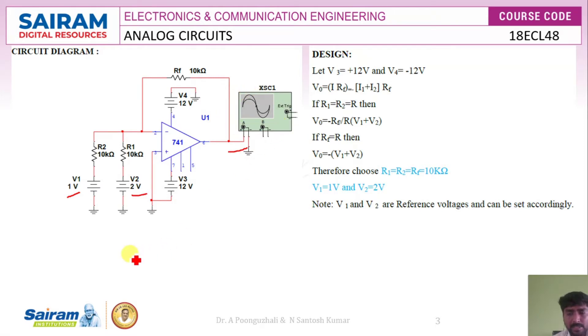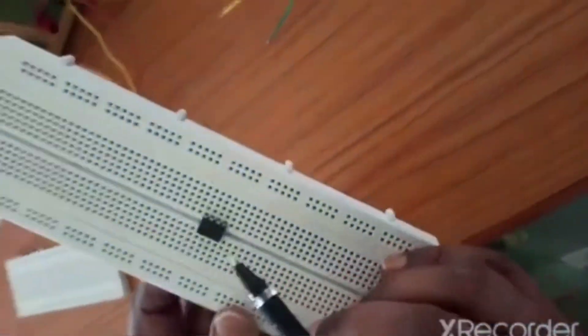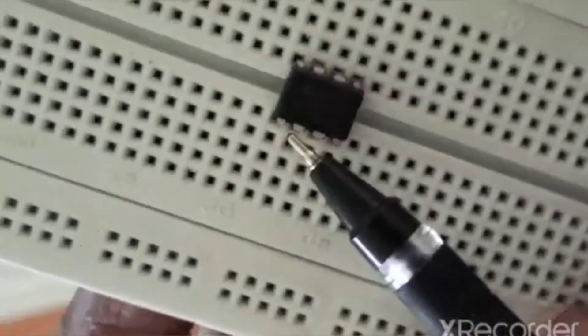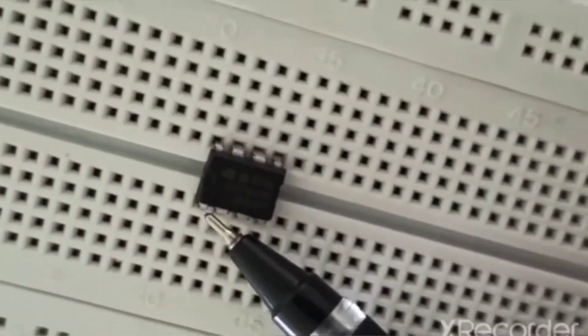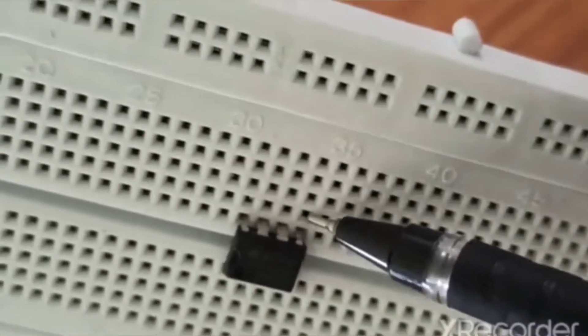This is the circuit diagram of the adder circuit. We are going to give two inputs to the op-amp to the inverting terminal, and the non-inverting terminal is connected to ground. This is your op-amp 741. The dot symbol represents pin number 1, so the pins are numbered 1 through 8.